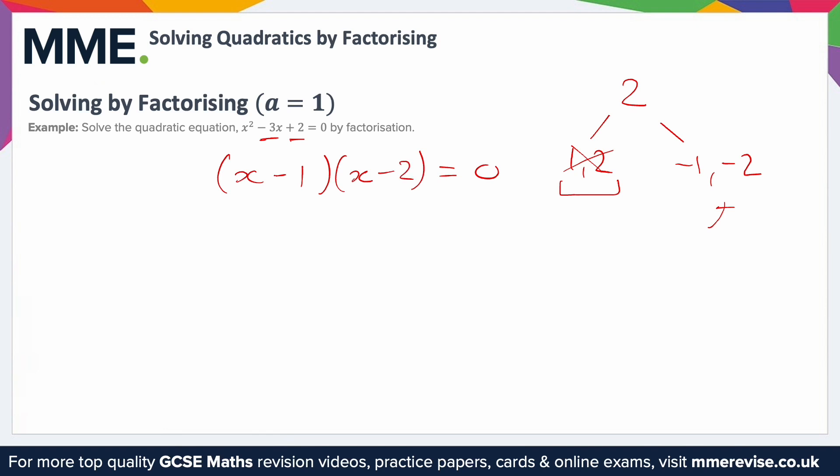We factorised it, but notice the question is to solve the quadratic equation by factorisation, not just factorise it. So what that means is to find the actual x values that you could put into this equation and it still makes sense. So put them into the left hand side and you get 0, which equals the right hand side.